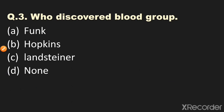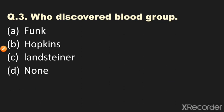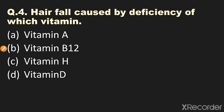Question number three: Who discovered blood groups? Options: A) Funk, B) Hopkins, C) Landsteiner, D) none. The answer is Landsteiner — Landsteiner discovered blood groups.